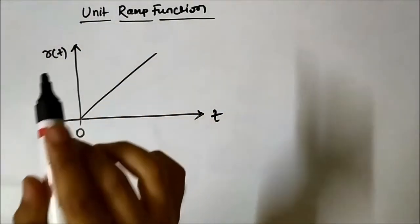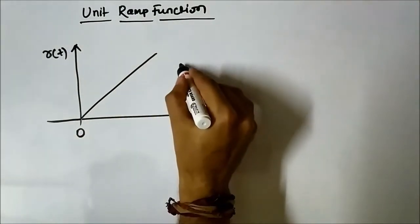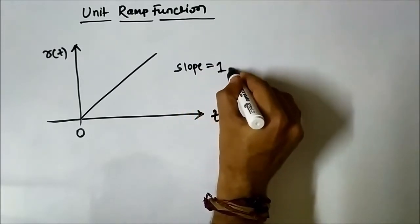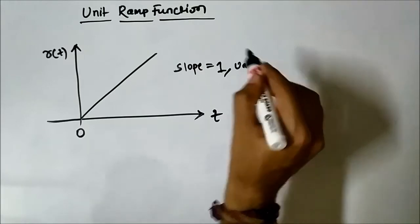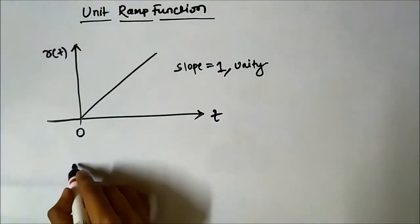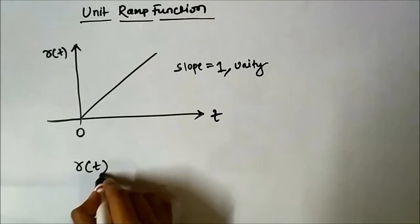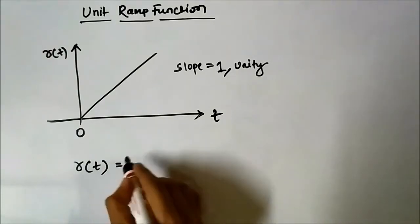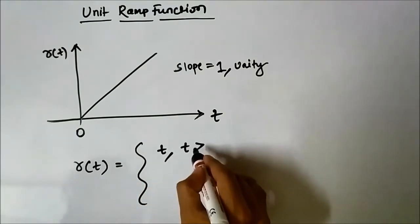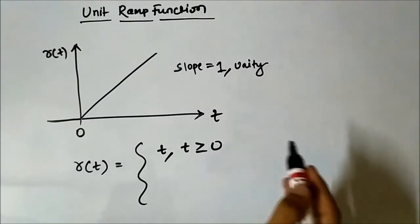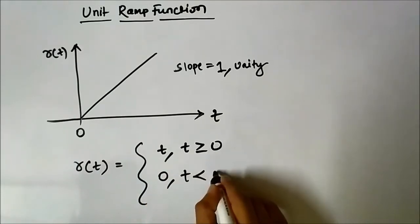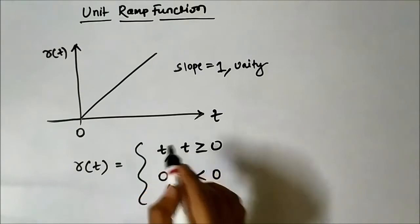For the unit ramp function, the slope is equal to 1 or unity. The unit ramp function is represented as R(t) = t for t greater than or equal to 0, and 0 for t less than 0. Here, the slope is equal to 1.